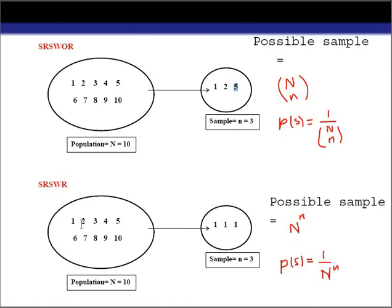In case of simple random sampling with replacement, what will happen? We consider the same example: a population of size 10 — 1, 2, 3, and so on — and we want to select a sample of size 3. Suppose unit 1 is selected at the first draw.